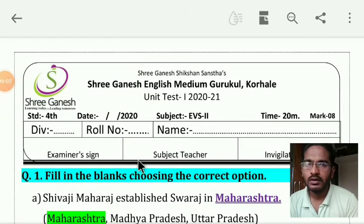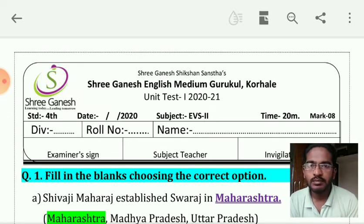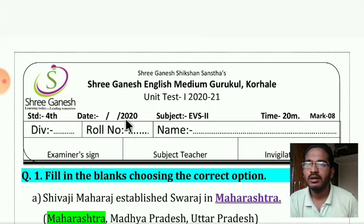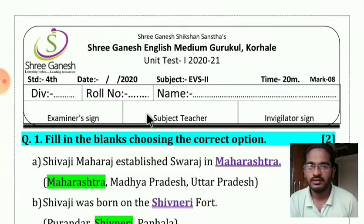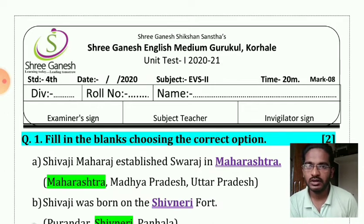Good morning, dear students! I hope you are all fine. So, in last week you had your unit test exam till Saturday, and on Friday your second paper was there. Most of you have solved the paper very well, but you have made some minor mistakes. You should understand those mistakes, and for that purpose I am here to explain the answer key of your question paper. You have to check your answers from your notebook and avoid those mistakes next time.